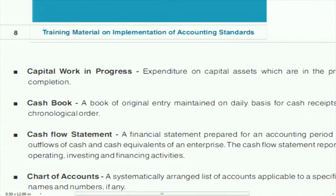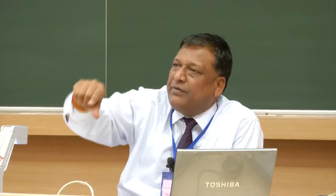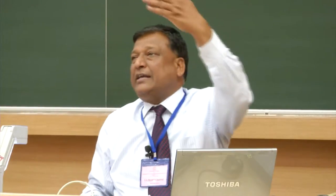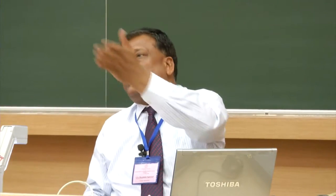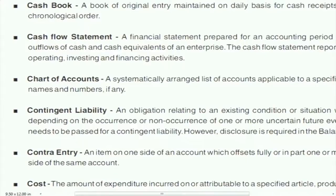The cash book records cash received and cash paid. The cash flow statement is derived from the cash book — it shows how cash comes in and how cash goes out, with an opening balance. That is the cash flow statement. Chart of accounts covers all accounts discussed.